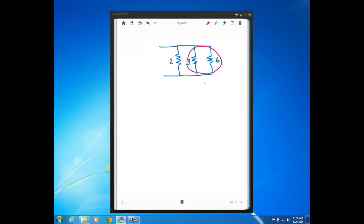If I look at those two in parallel and I use product over sum, well, REQ of the 3 and 6 in parallel using product over sum, it's going to be 18.